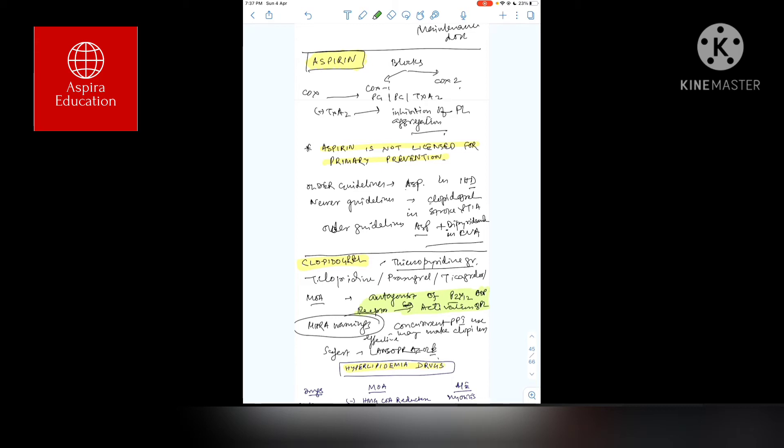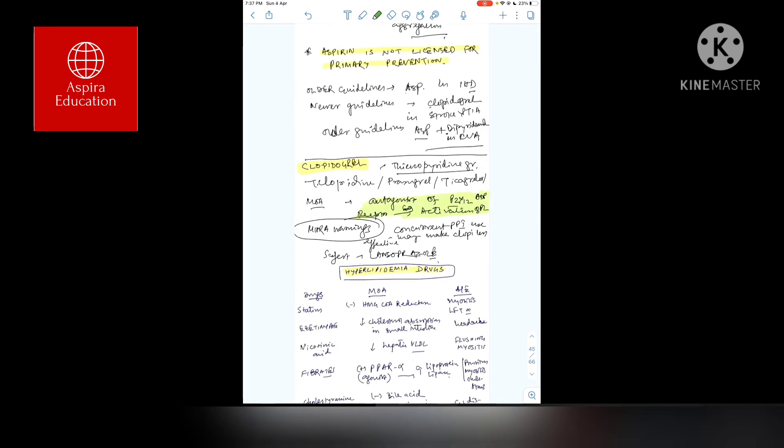Coming to clopidogrel - these are the thienopyridine group of antiplatelets. Others in this group are ticagrelor and prasugrel. Mode of action: they are antagonists of P2Y adenosine diphosphate receptor on platelets, so they inhibit platelet activation. This is a question I faced during my exam. Remember, the people dealing with cardio and neuro have already extensively discussed clopidogrel.